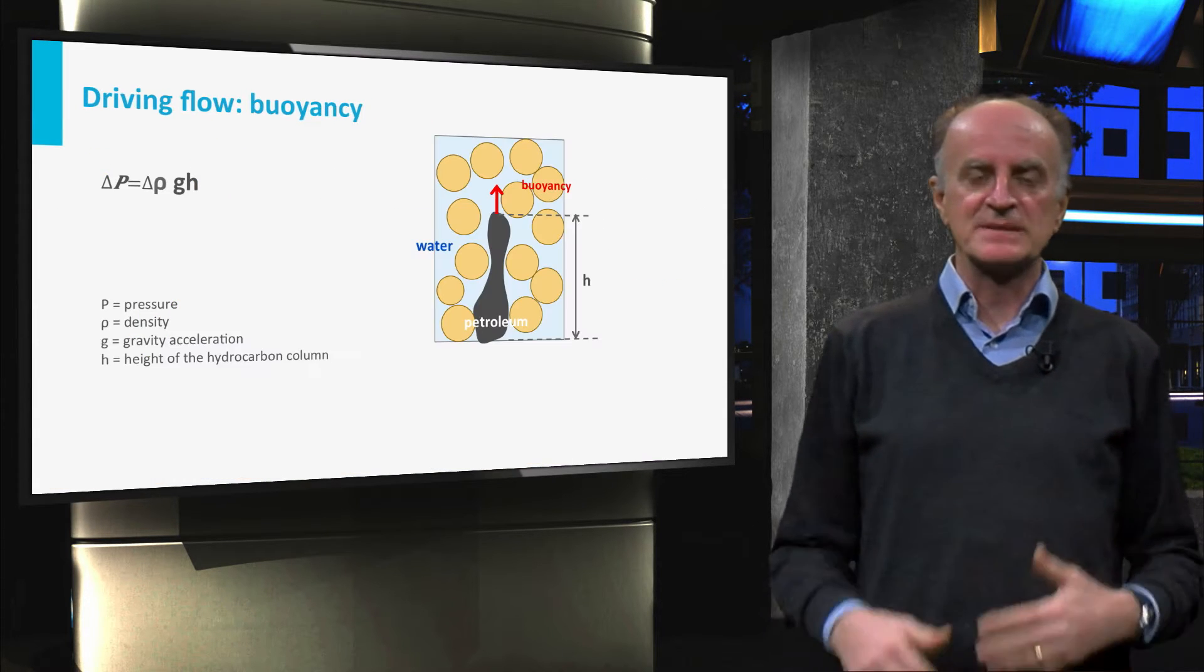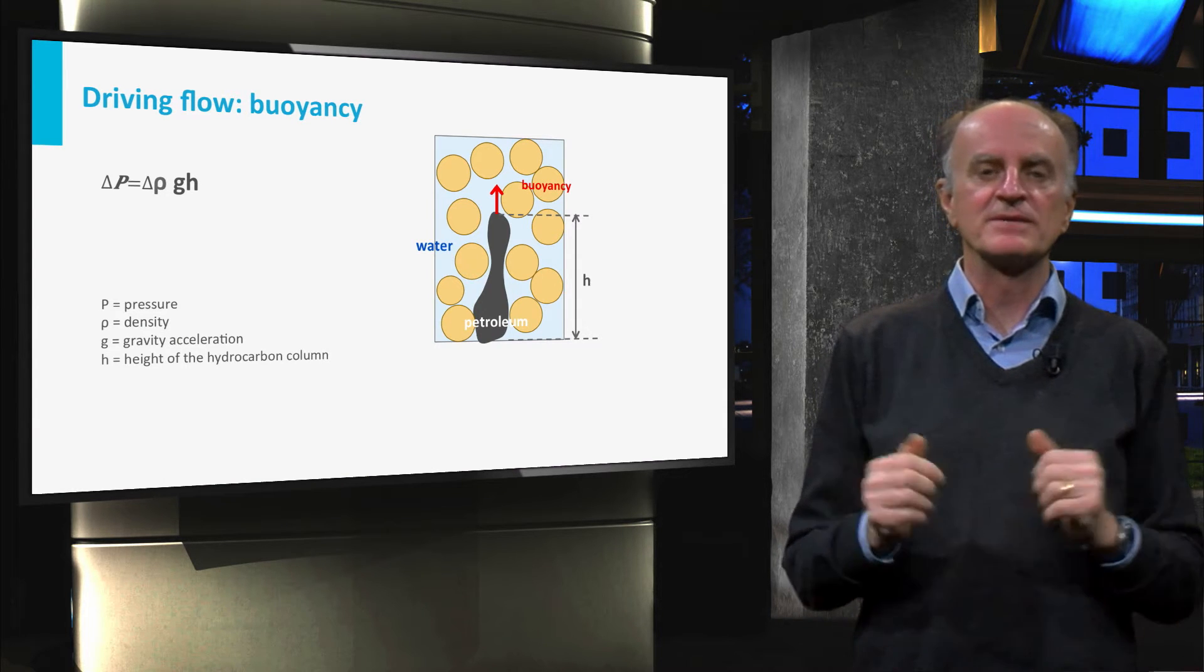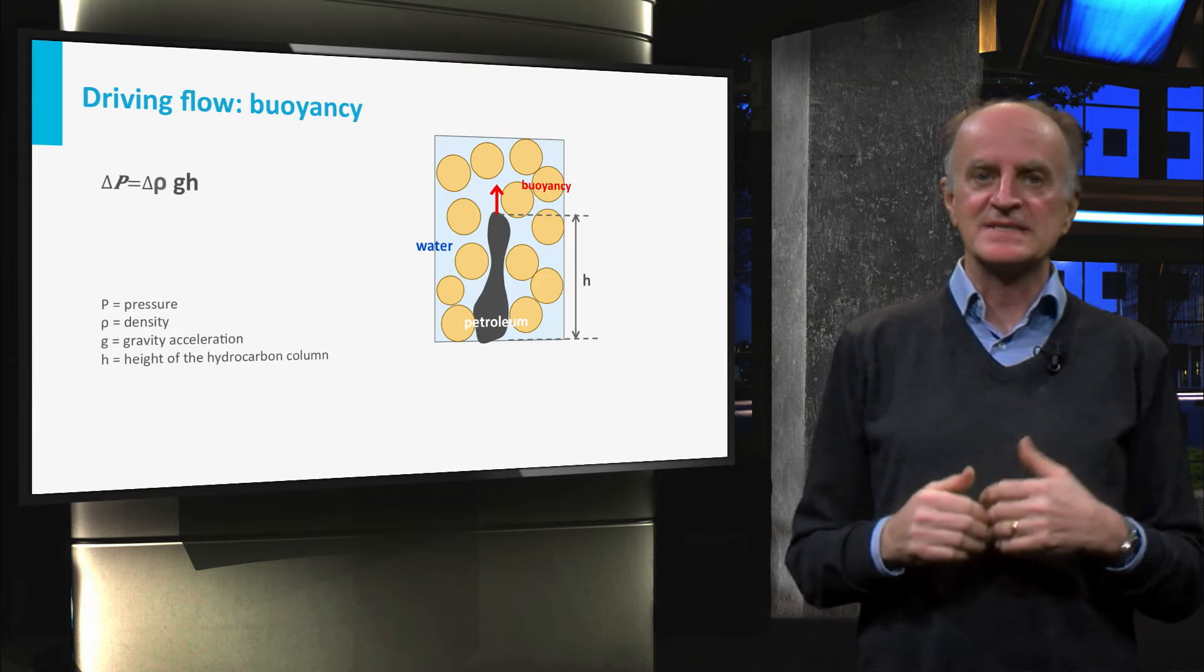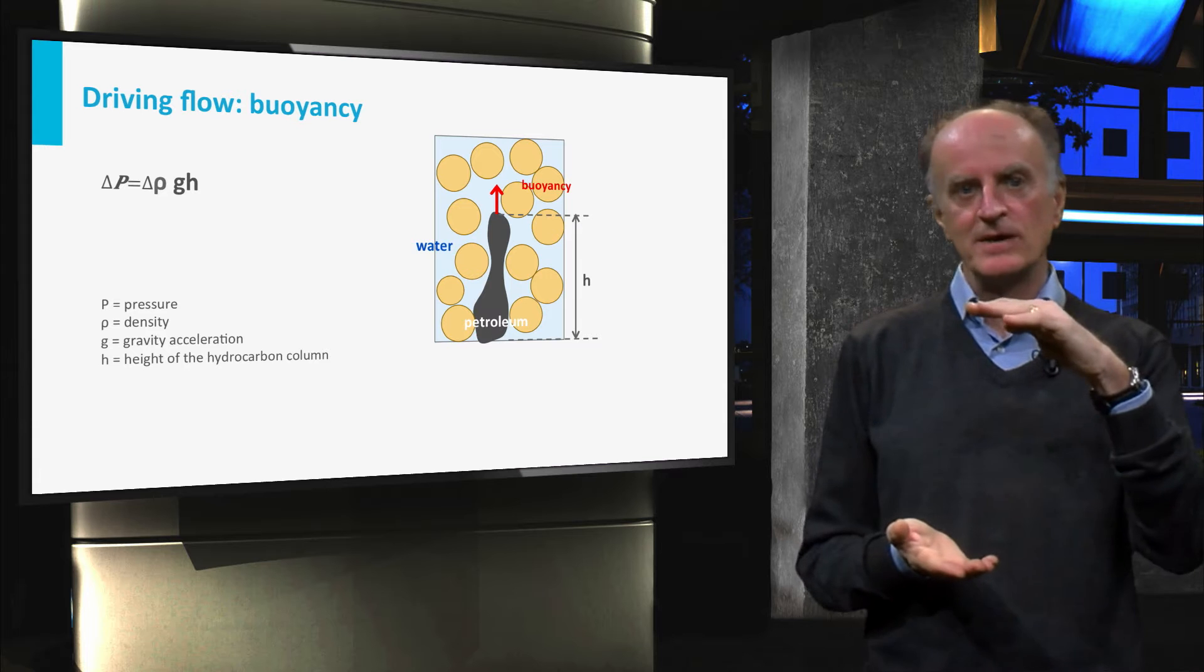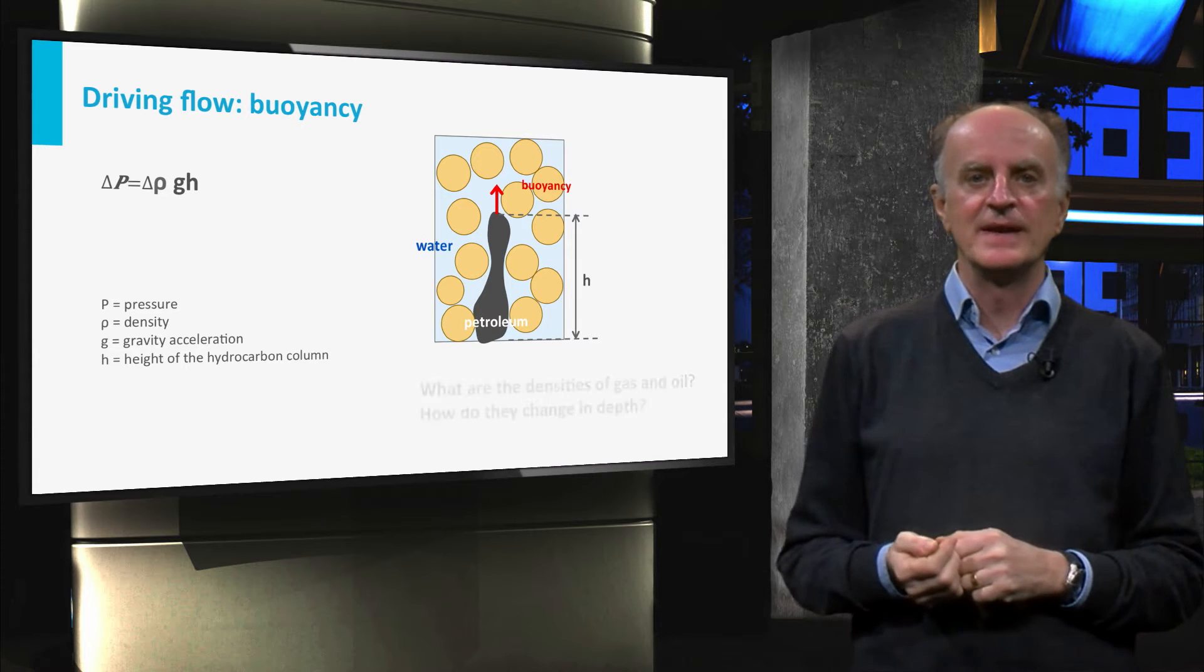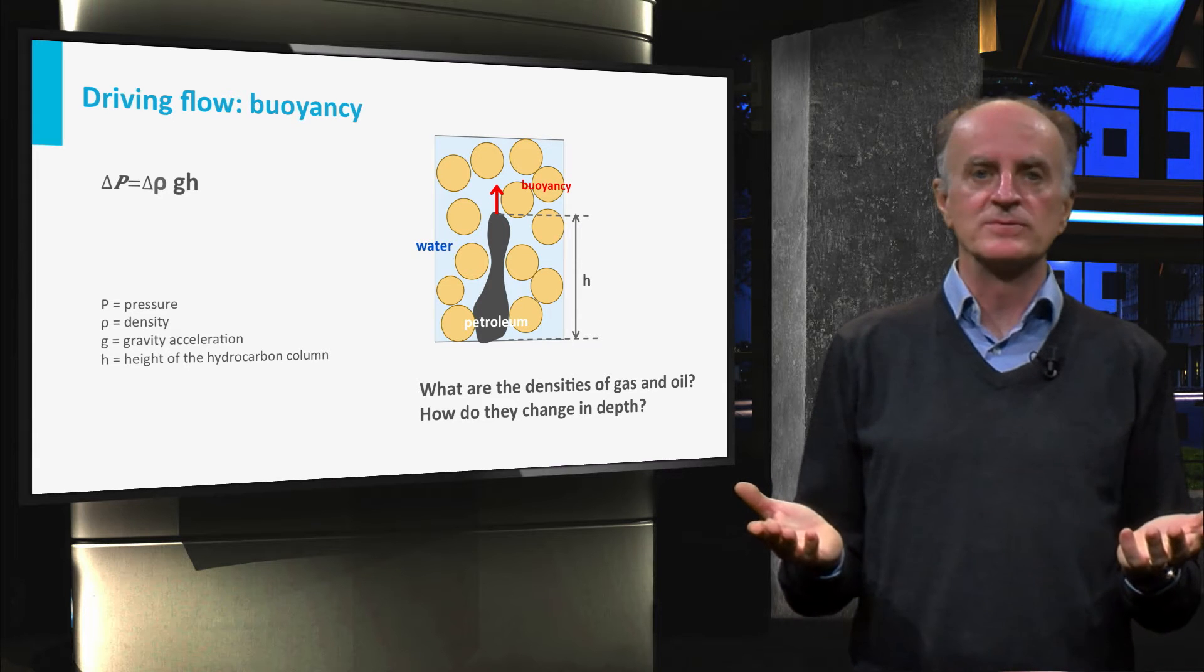Buoyancy is the pressure exerted on a mass with a density difference from that of the surrounding. It is directly proportional to the density difference between the two fluids and to the height of the moving fluid. How big are density differences? How strong is the buoyancy motor?